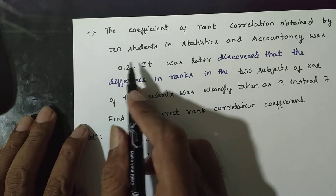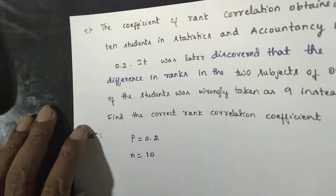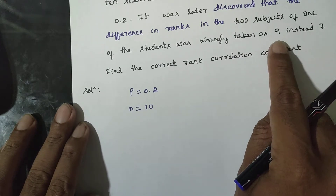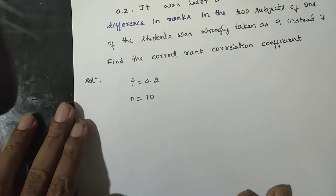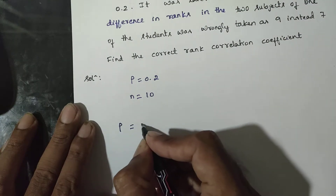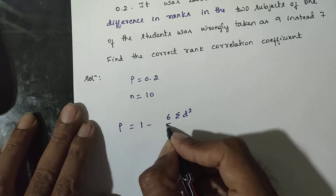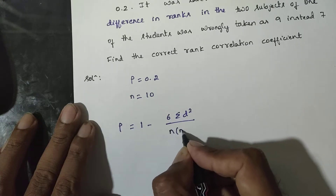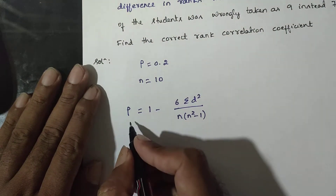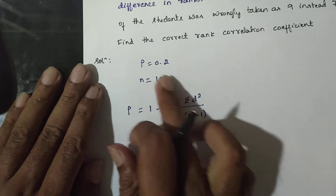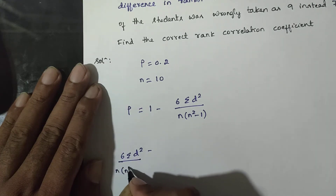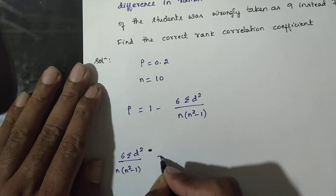The coefficient of rank correlation was obtained with 10 students, n equals 10, rho equals 0.2. The difference was wrongly taken as 9. Using the formula: 1 minus 6 into summation of d² divided by n into n squared minus 1.